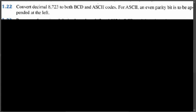This problem is asking us to convert decimal 8723 to both BCD and ASCII codes. For ASCII, an even parity bit is to be appended at the left. We have the number 8723 given.